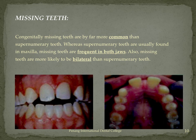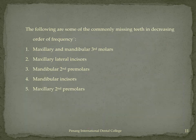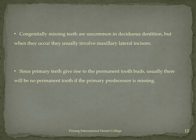Missing teeth, on the other hand, are actually more common than supernumerary teeth. Whereas supernumerary teeth are usually found in the maxilla, missing teeth are frequent in both jaws and incidence is generally bilateral. The sequence of commonly missing teeth in decreasing order of frequency is: maxillary and mandibular third molars, maxillary lateral incisors, mandibular second premolars, and then mandibular central incisors. Congenital missing teeth are uncommon in the deciduous dentition, but if it occurs, it is generally the maxillary lateral incisors.